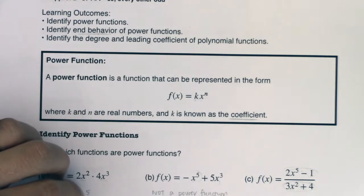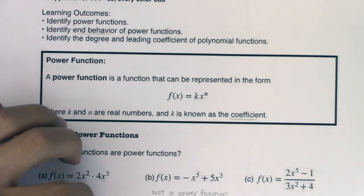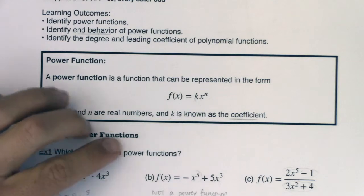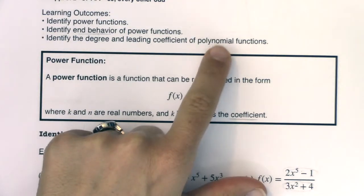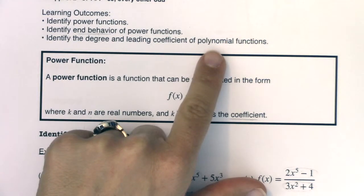And we should know the end behavior of the power functions. Again, both ends up, both ends down. Maybe it's left end up, right end down. Maybe it's right end up, left end down. But based on those power functions and their end behaviors, that will regulate the end behavior of polynomial functions.